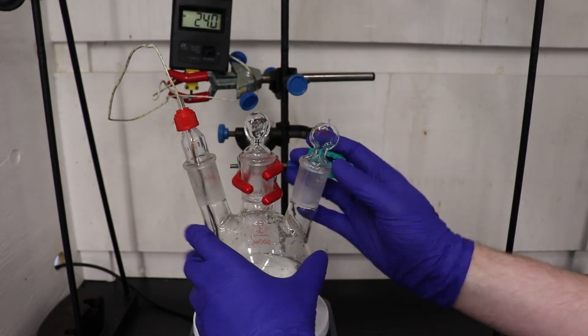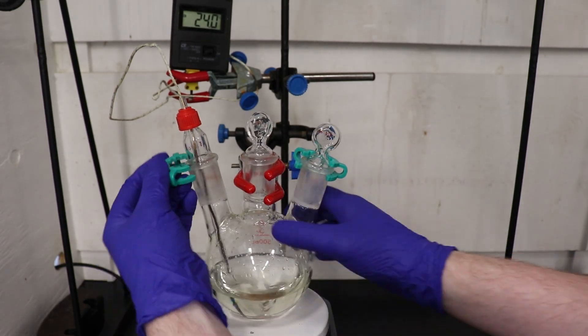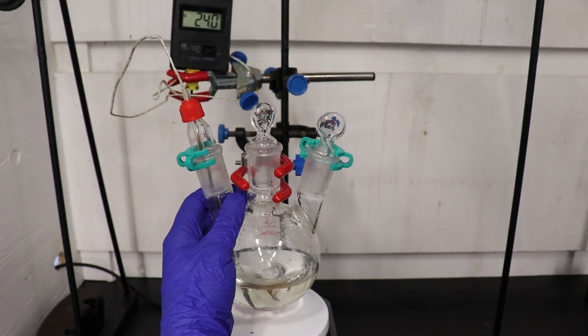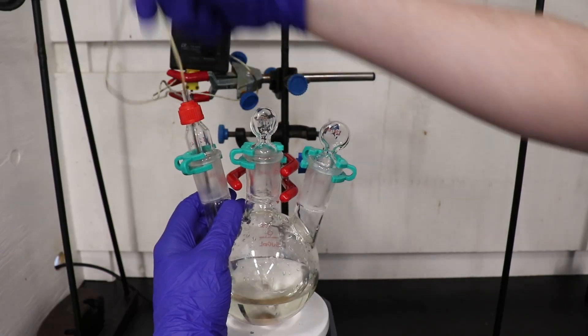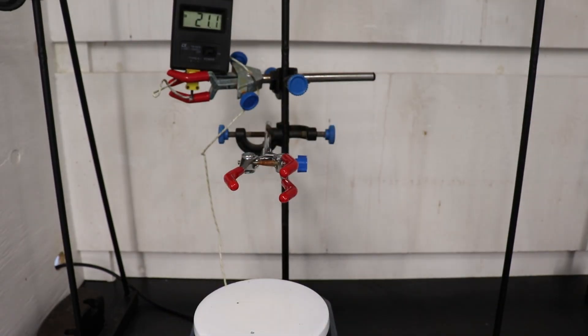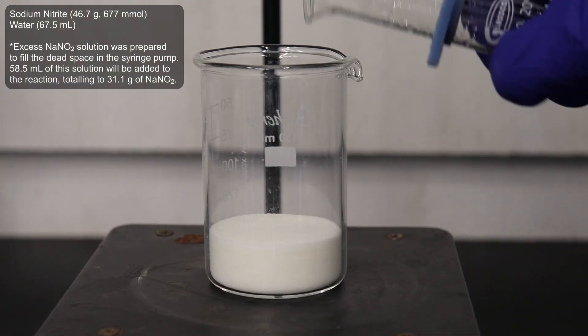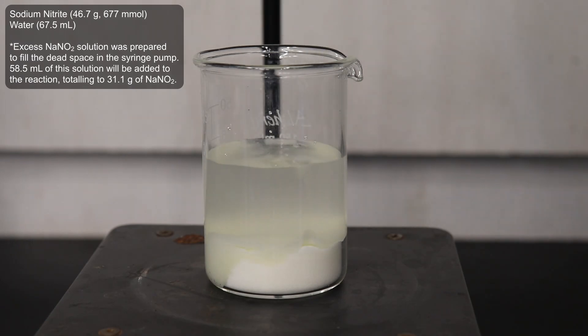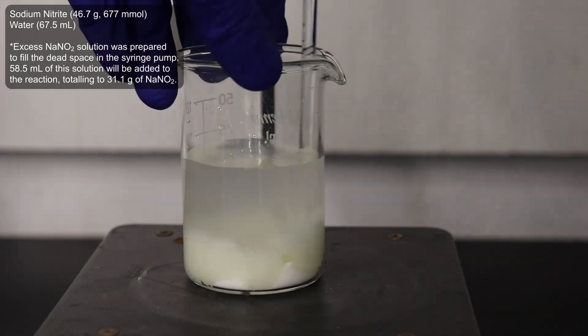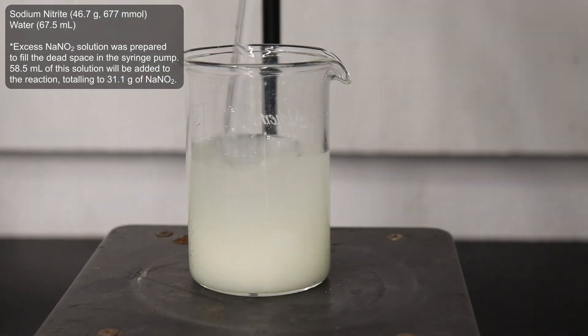Now, this reaction must be carried out at low temperatures, as is typical for diazotization reactions. So, I stoppered the flask and moved it into the freezer to preemptively cool down. In the meantime, I prepared a solution of 46.7 g of sodium nitrite dissolved in 67.5 mL of water, which was set aside and allowed to warm up to room temperature.